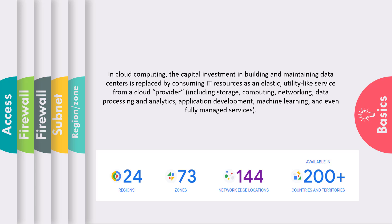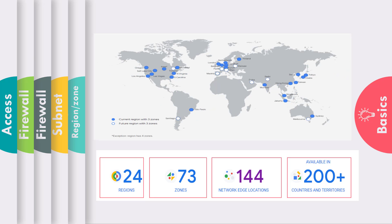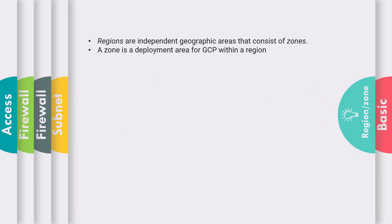GCP is available in around 200-plus countries. These 144 network zones are spread across the globe, with a majority currently in the US and Europe. Most regions have three zones, except Iowa which has four zones. A region is an independent geographic area consisting of zones, and a zone is a deployment area for GCP resources within a region.